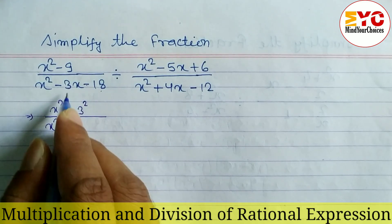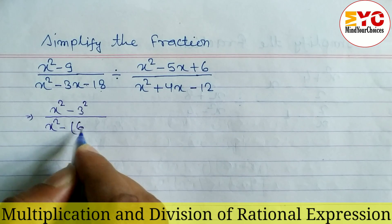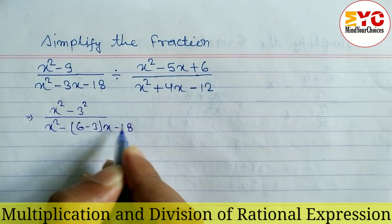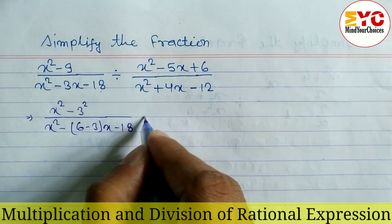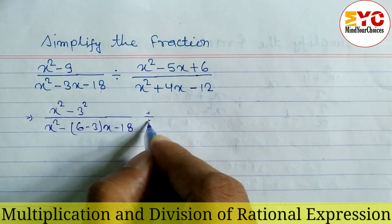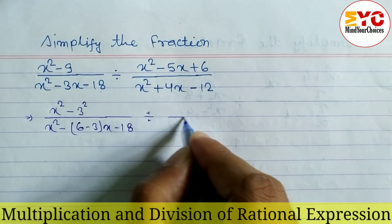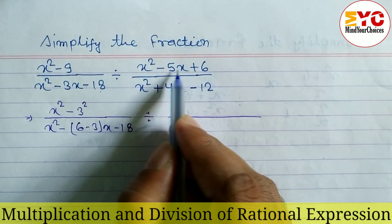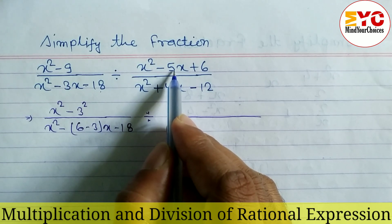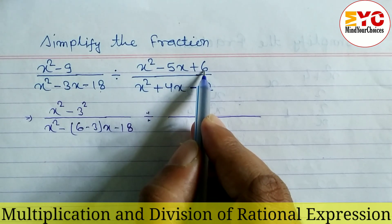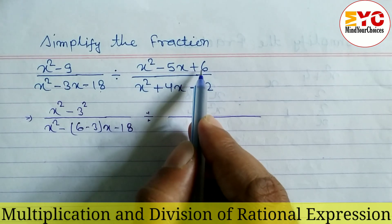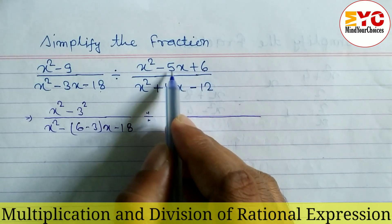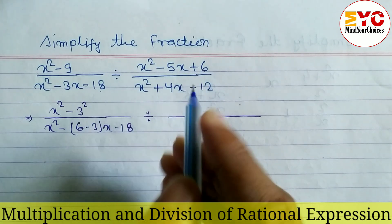So we write x squared minus, and in place of 3 we write 6 minus 3, giving x minus 18. Then we also have to factorize the next part: multiplying to get 6 and adding to get 5. The factors are 3 and 2, since 3 times 2 is 6 and 3 plus 2 is 5.